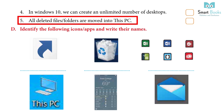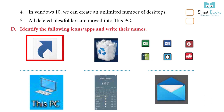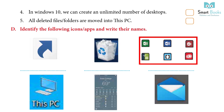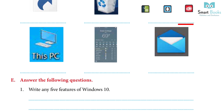Identify the following icons and apps and write their names — Answer: 1. Shortcut icon. 2. Recycle Bin. 3. Application icon. 4. This PC icon. 5. Weather app. 6. Email icon.